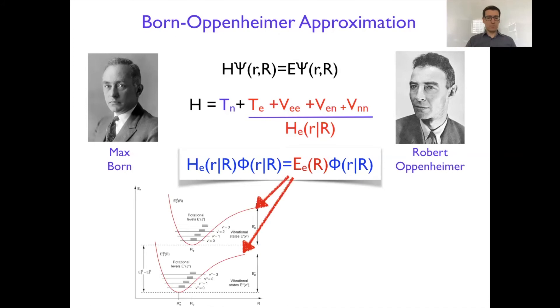That's what can be done in spectroscopy, for example. These electronic energies or potential energy surfaces, because these are electronic energies that depend on the nuclear coordinate, they form some potential surfaces on which the nuclei are moving and vibrating, rotating.